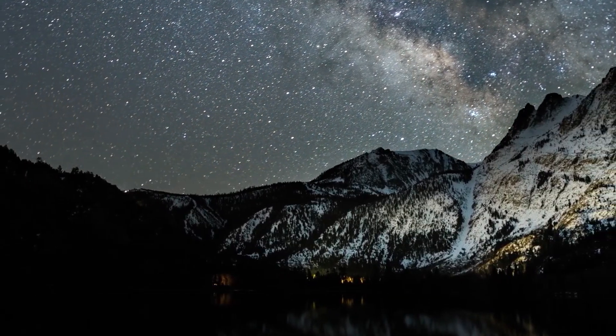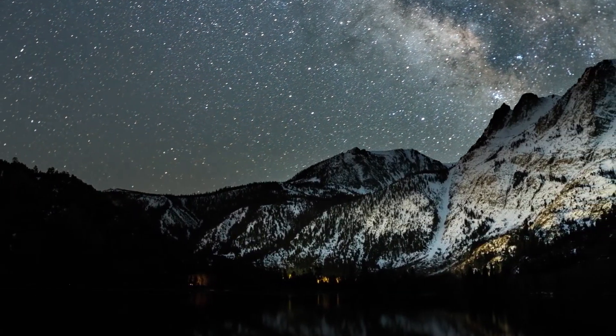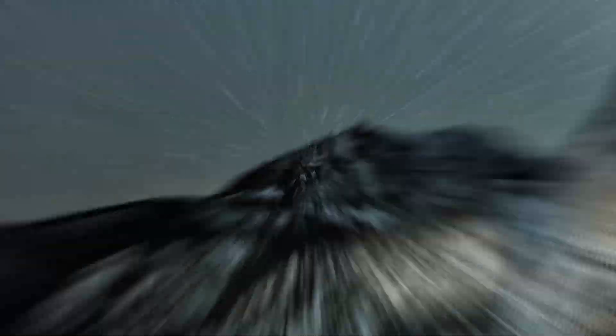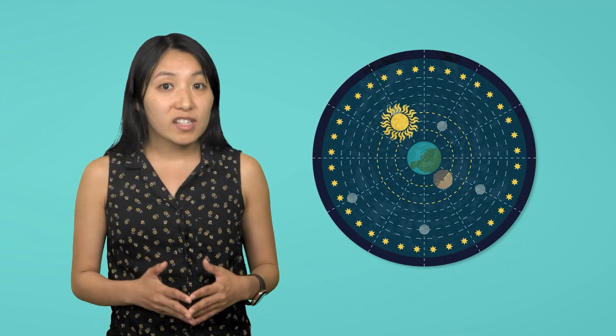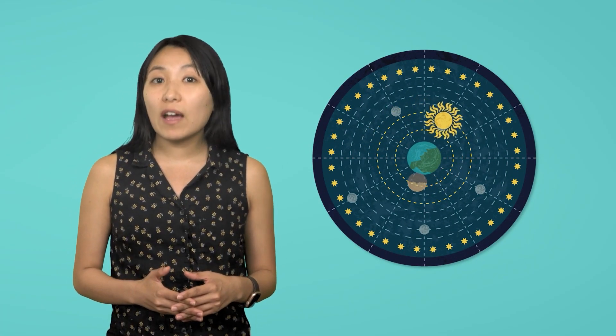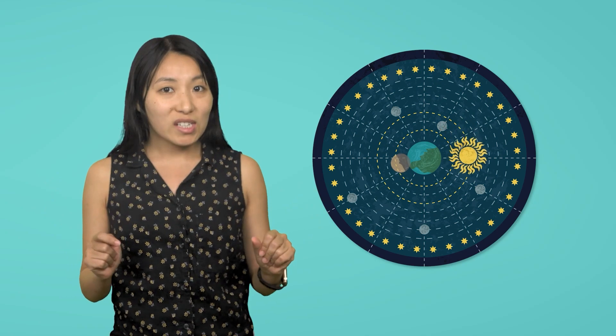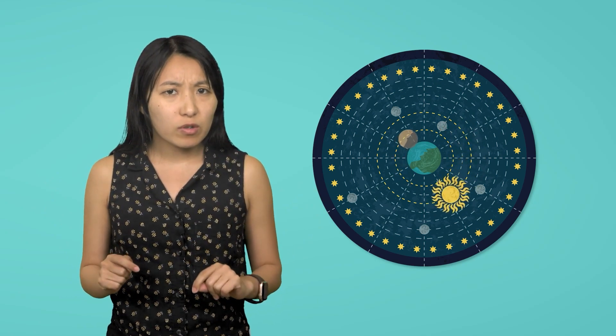But a model of the universe with Earth at the center didn't explain everything. Aristotle's model said that the planets all moved around the Earth in perfect circles. But as astronomers observed the planet Mars, they noticed something. Sometimes it appeared to be bigger and brighter in the sky, other times it looked much smaller and dimmer.